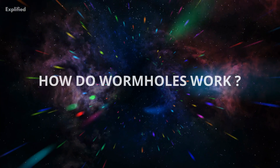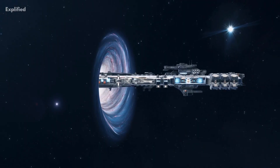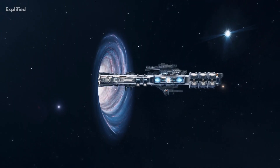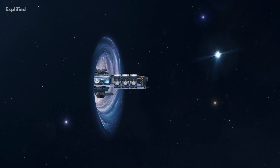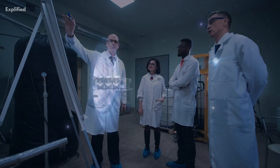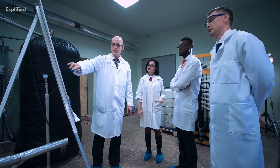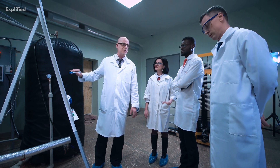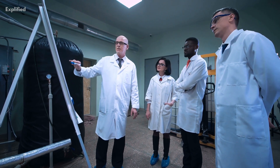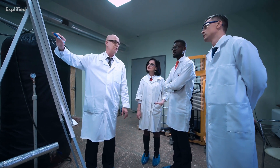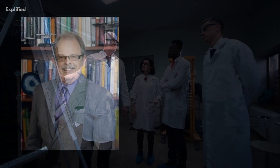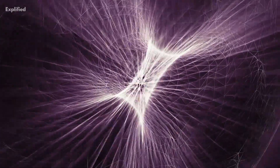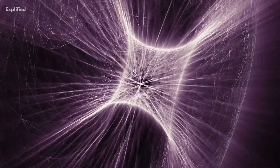How do wormholes work? Wormholes could link not just two distinct areas of the same universe but possibly two other universes. Some scientists have hypothesized that time travel would be possible if one mouth of a wormhole were to be moved in a particular way. According to astronomer Eric Davis, traversable wormholes allow travel into the past or the future.